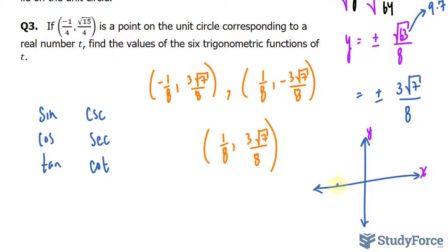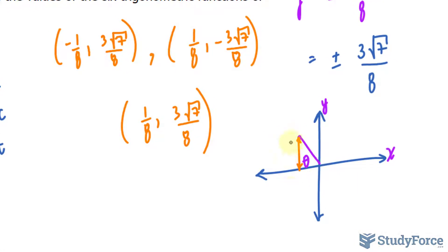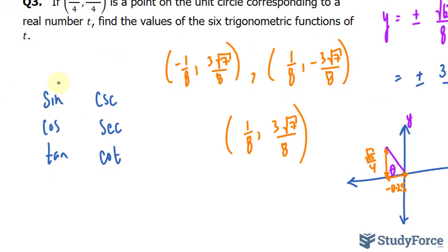Negative 1 quarter is this way and given that this y-coordinate is positive, we would have a point, let's say, right here. And creating an acute triangle from this point to the origin, like this, will give us that as one side of the triangle being the square root of 15 over 4 and this part, right here, being negative 0.25. Now what they're saying is that they want us to use these trigonometric functions that correspond to the following configuration.